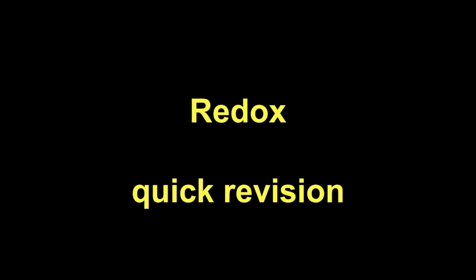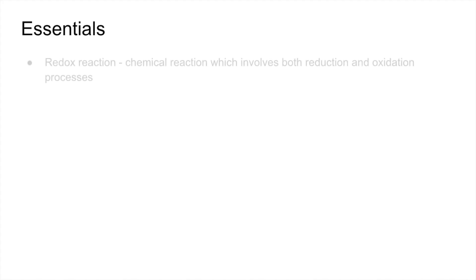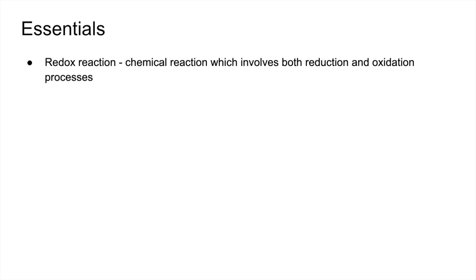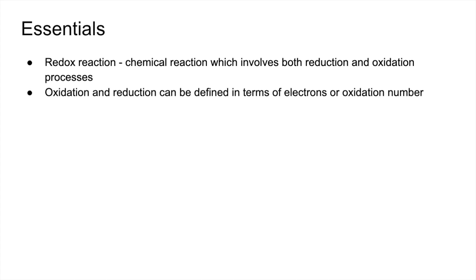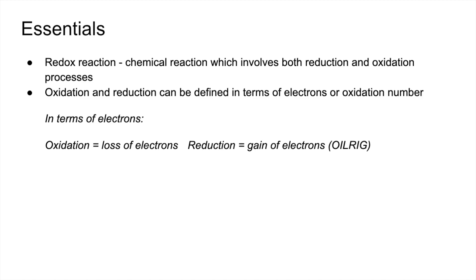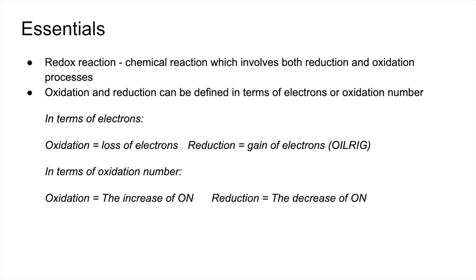This is a quick revision video on redox. A redox reaction is a chemical reaction which involves both reduction and oxidation processes. Oxidation and reduction can be defined in terms of electrons or oxidation number. In terms of electrons we use the OIL RIG acronym: oxidation is loss of electrons, reduction is gain of electrons. In terms of oxidation number, oxidation is the increase of oxidation number and reduction is the decrease of oxidation number.